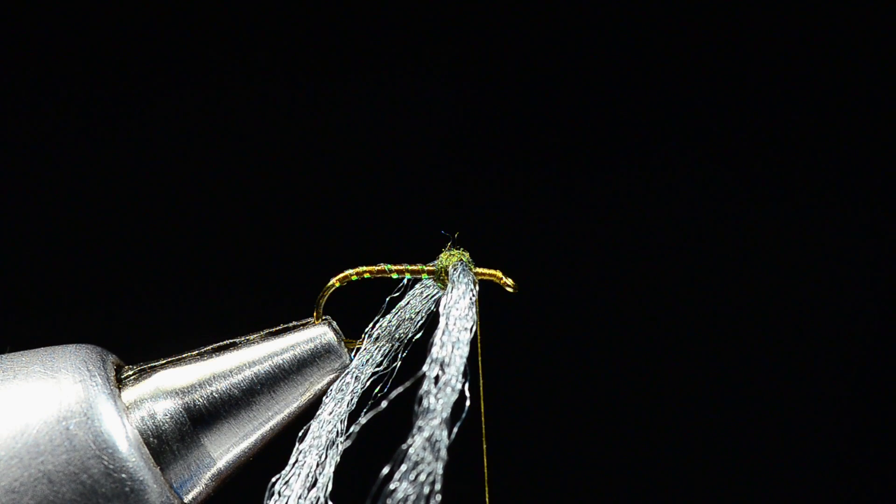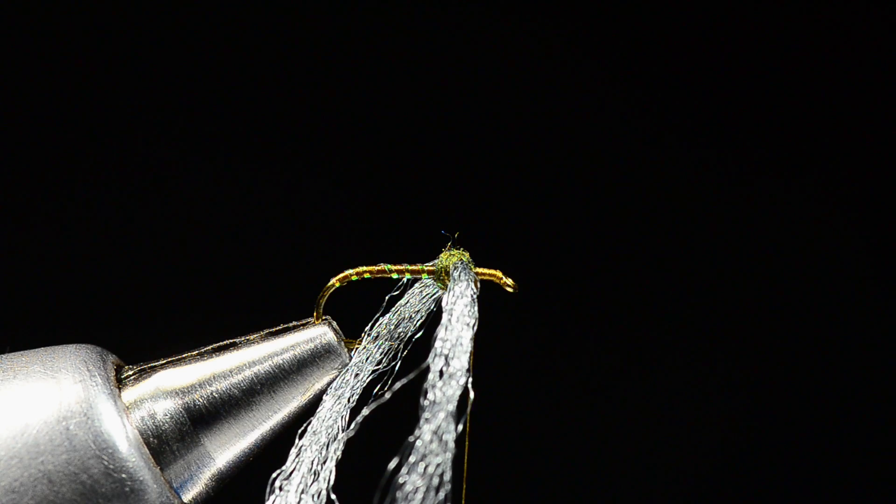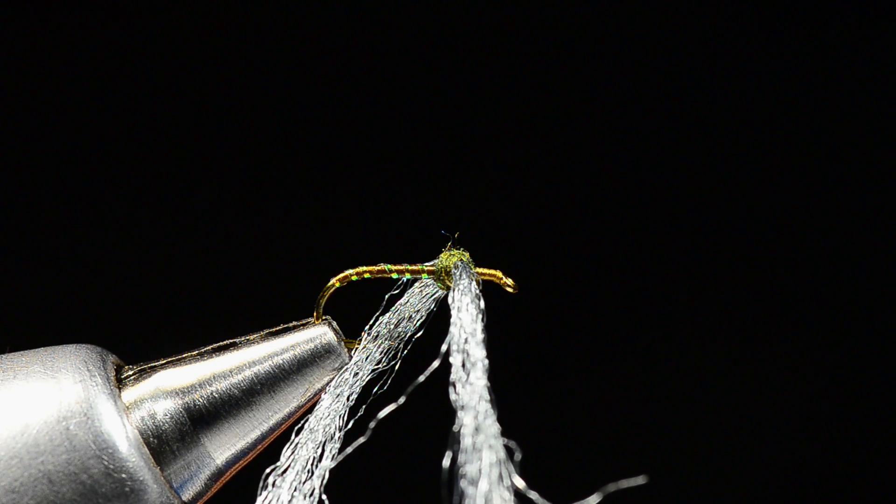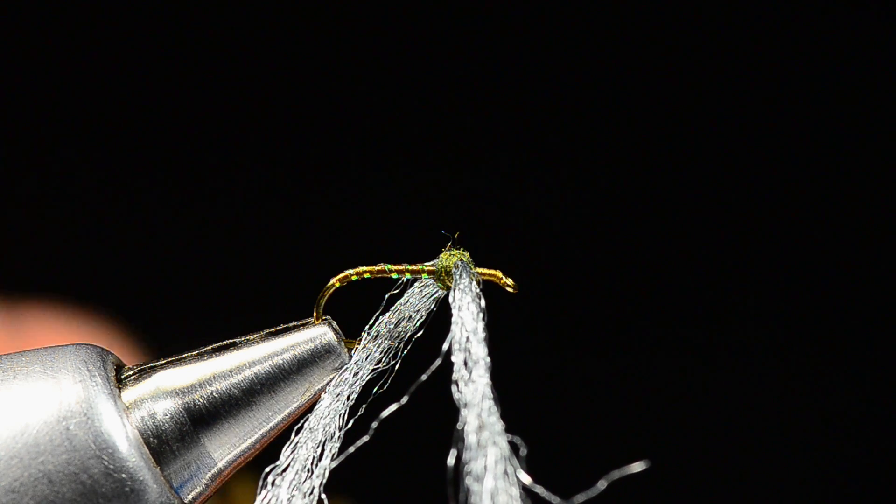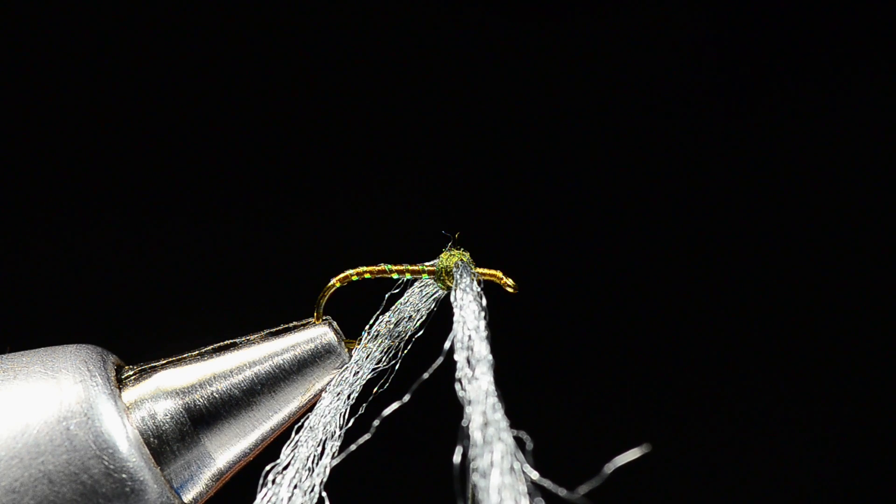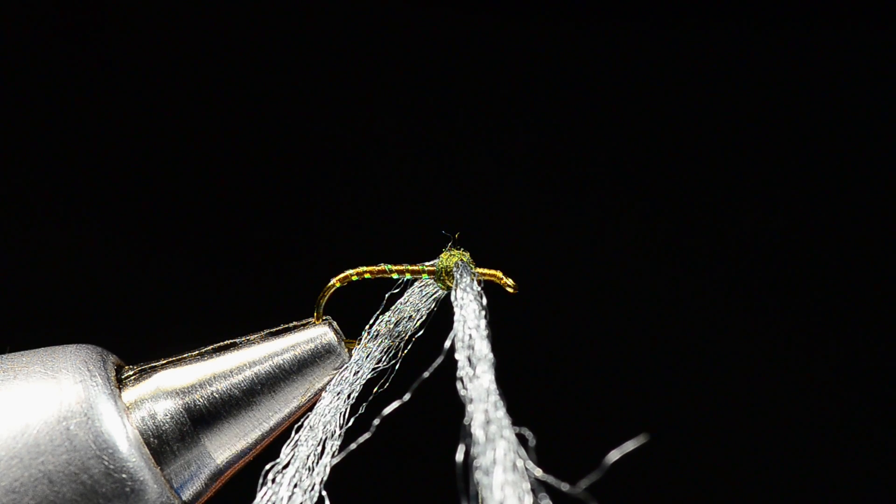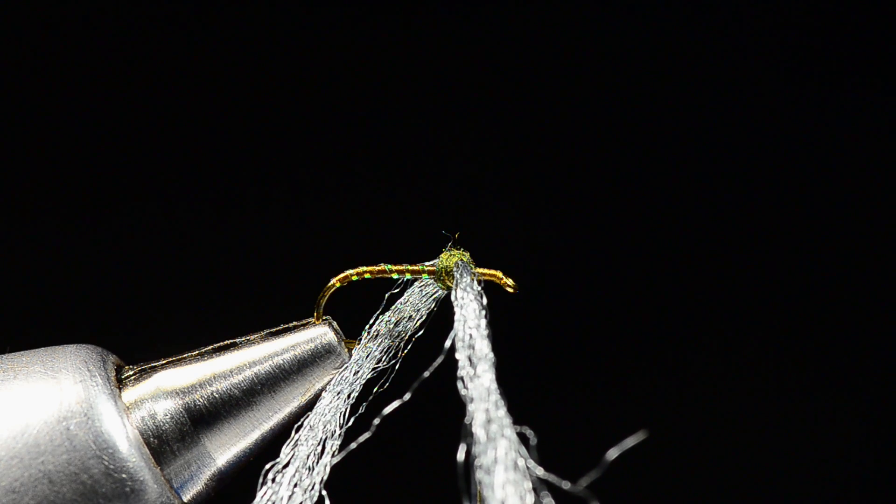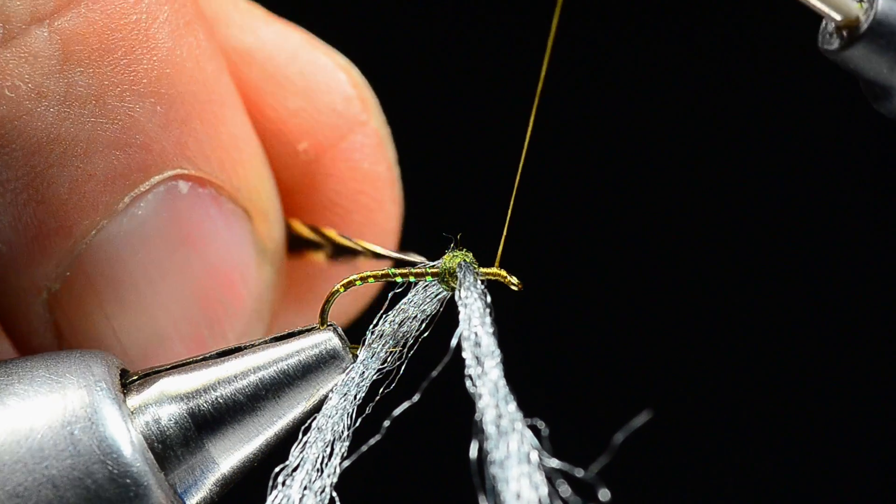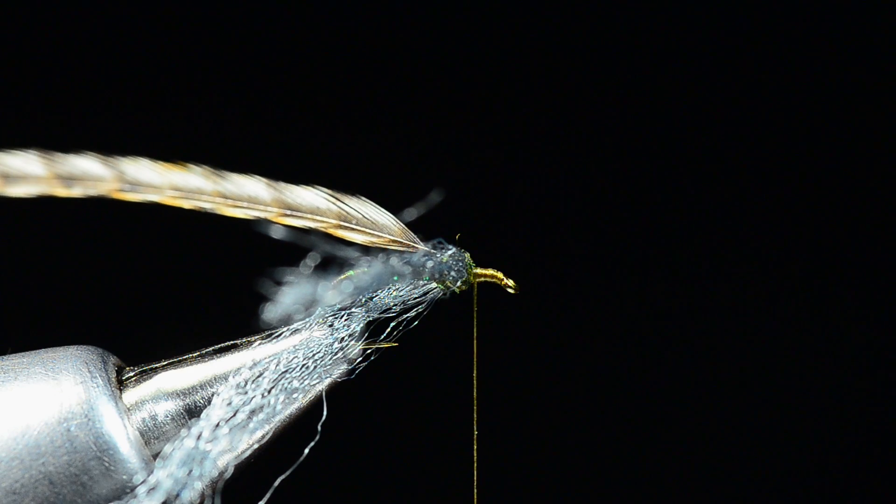Now for the hackle, any variety of hackle that you have, grizzly, blue dun, anything like that will work just fine, even brown. I've got a ginger feather or barred ginger feather sitting here on my desk that is a really nice color, so I'm going to use it. You sort of want an oversized feather, a feather that's at least an appropriate hook size, size 16, if not even a 14 for a size 16 fly.